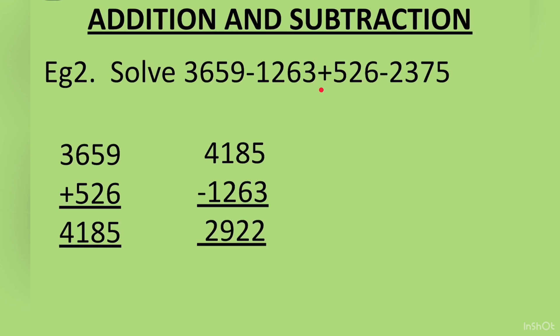Then in the next step, from this answer we will subtract the first negative number, that is 1,263. So we will write 4,185 minus 1,263. The answer that we will get is 2,922. Now from this answer 2,922 we will subtract this number.